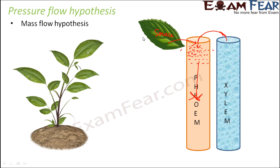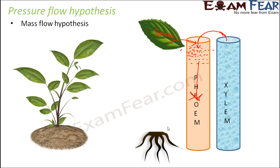As a result, the sugar solution starts to move from the region of high pressure towards regions of lower pressure — it can move in either direction, upward or downward. Suppose it moves down the pressure gradient. As it moves toward lower pressure, wherever it finds a sink — a root, a flower, an apical meristem — the sugar is delivered there.